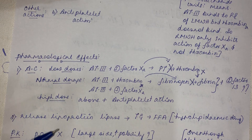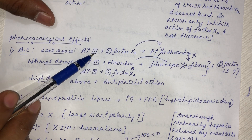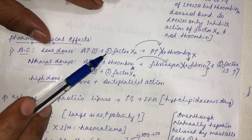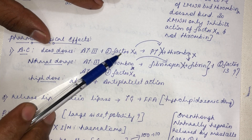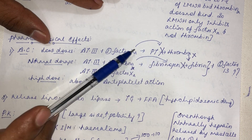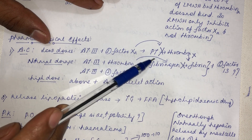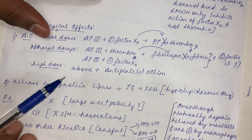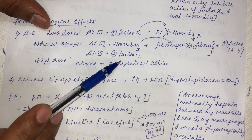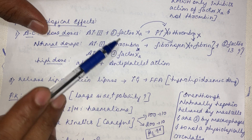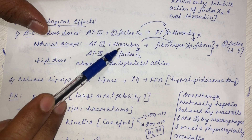Pharmacological effects of heparin vary by dose. At lower dosage, factor 10a binds antithrombin-3 and is inhibited, indirectly preventing the conversion of prothrombin to thrombin. At normal dosage, thrombin itself binds both heparin and antithrombin-3 and gets inactivated along with factor 10a, preventing the conversion of fibrinogen to fibrin.